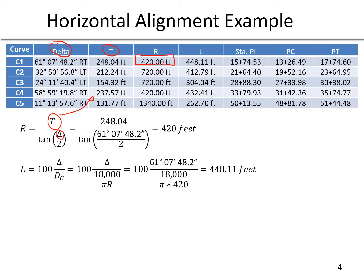Next we calculate the length. We need the radius just calculated and the delta. The equation is 100 multiplied by delta divided by the degree of curvature, where degree of curvature equals 18,000 over pi times the radius. So it's 100 multiplied by 61 degrees 7 minutes 48.2 seconds, divided by 18,000 over pi times 420. This gives us a length of 448.11 feet.